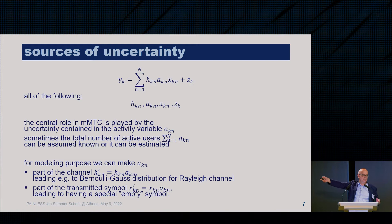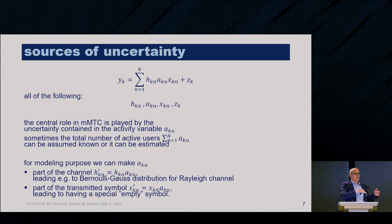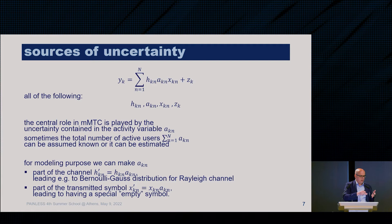The way you can work with this model is to make the activity part of the transmitted signal: an empty signal means not active, a non-zero signal means the device wants to say something. Or you can make the activity part of the channel — instead of a Gaussian channel you have a Gauss-Bernoulli channel, where an active user has a non-zero channel and an inactive user does not.